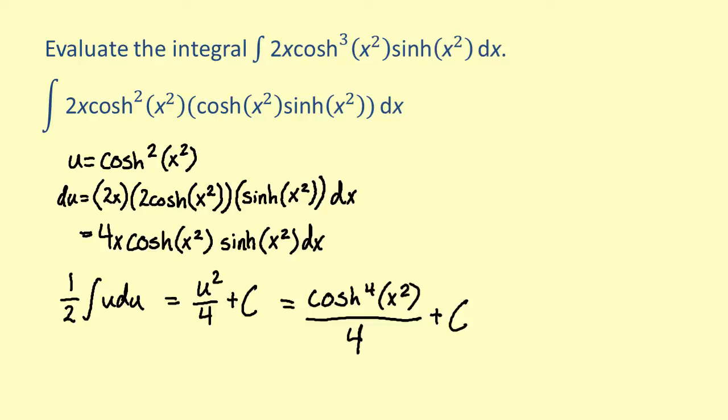So, what seemed like a complicated integral evaluates to get the hyperbolic cosine to the fourth of x squared over 4 plus c.